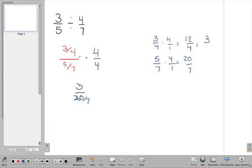So just the same way I got rid of the 4 here, now I'm going to get rid of the 7. And I'm going to do that by this time, multiplying by 1, and I'm going to represent that 1 as 7 over 7.